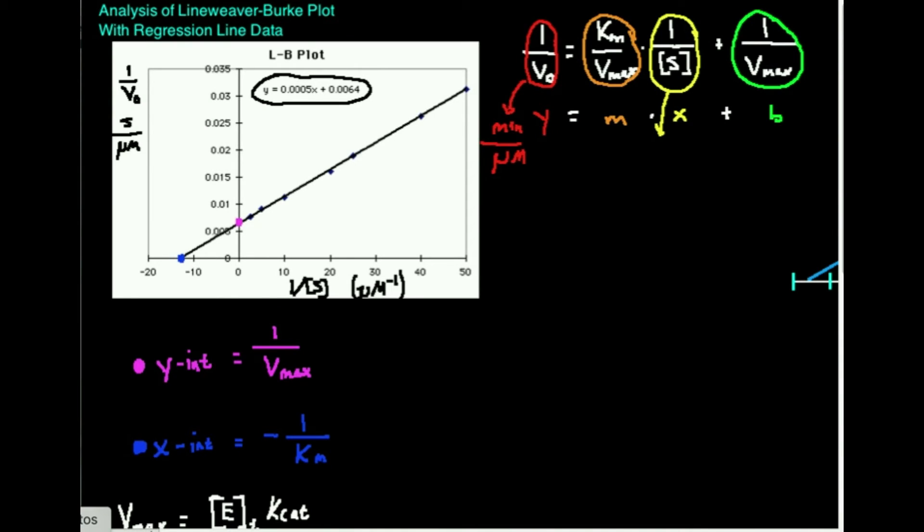So just a quick recap from the theory videos. 1 over v0 is the y. The slope of the line m is the Km divided by the Vmax. x is 1 over the substrate concentration, and the y-intercept b is 1 over the Vmax.